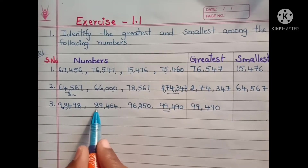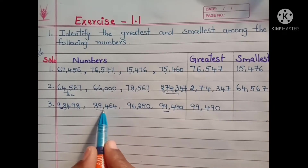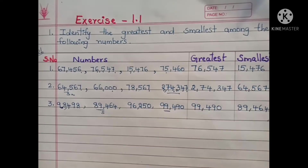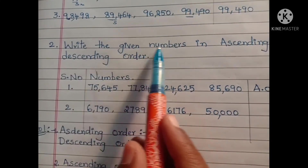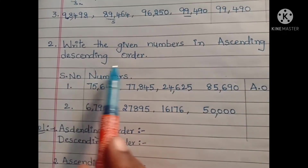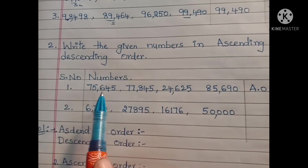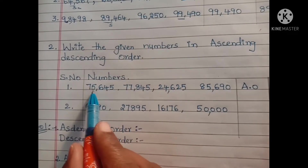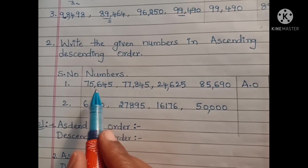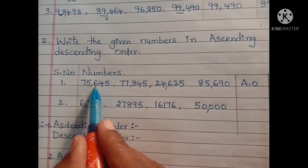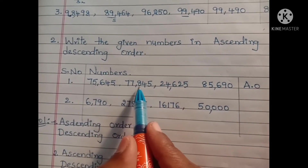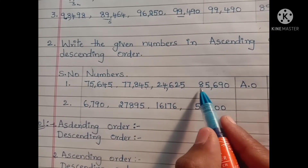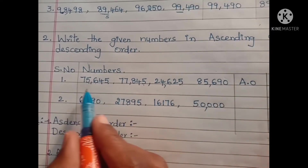Next, among 98, 89, and 96, the smallest is 89, so the smallest number is 89,464. Now the second problem: write the given numbers in ascending order and descending order. Ascending order means smallest to biggest; descending order means biggest to smallest. For the first question, the numbers are: 75,645; 77,845; 24,625; and 85,690.